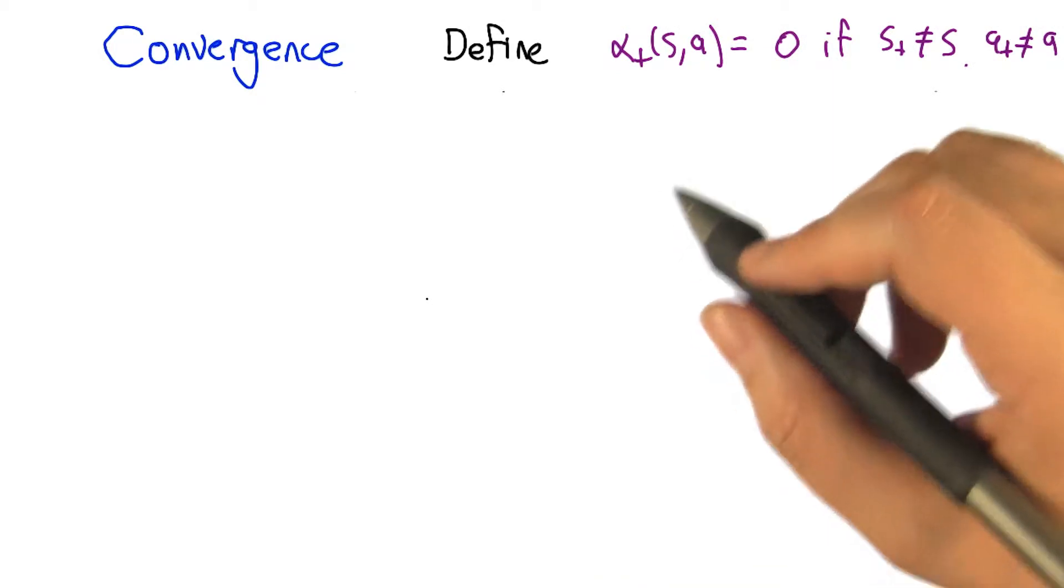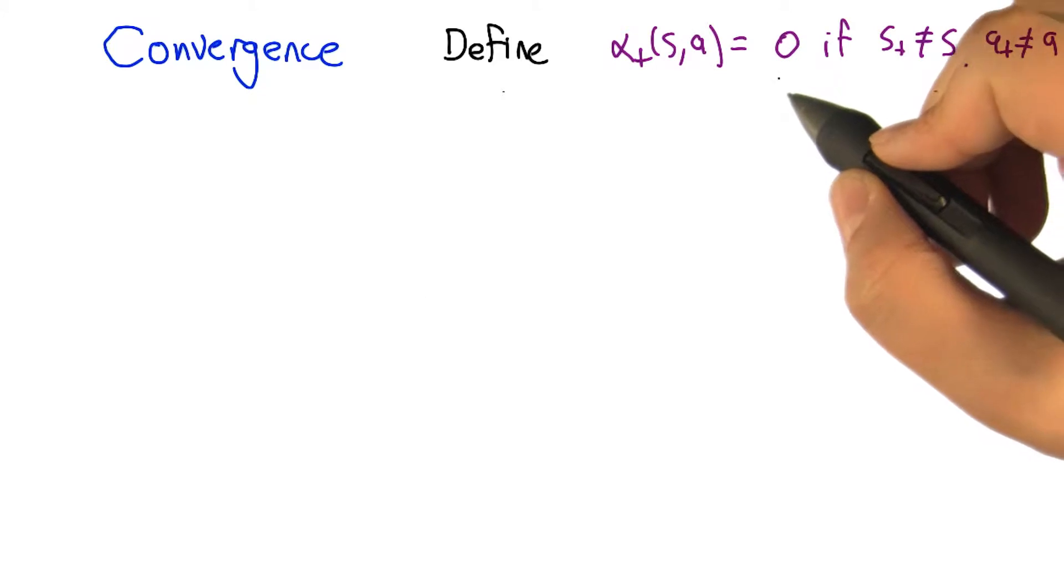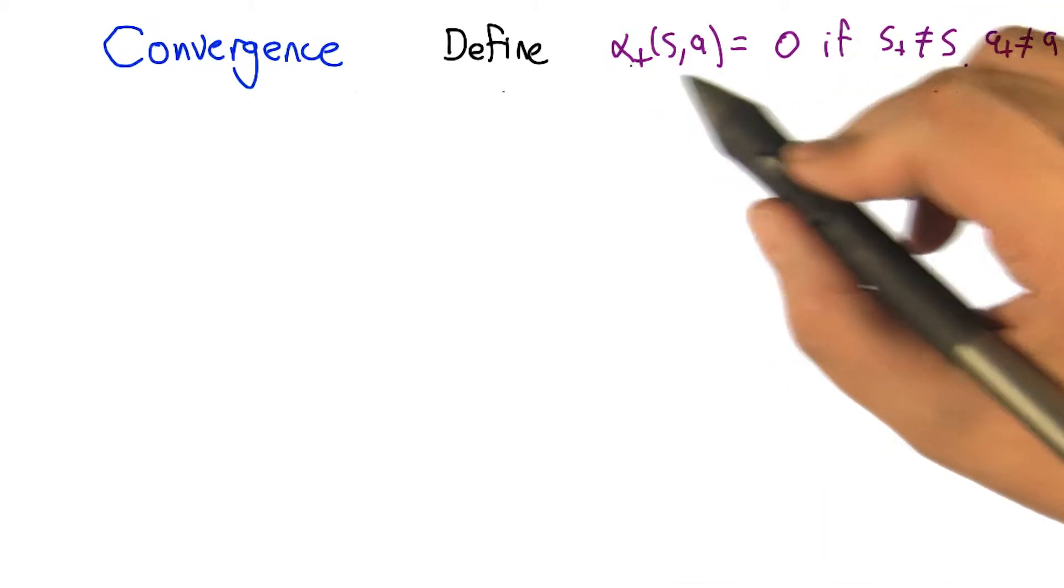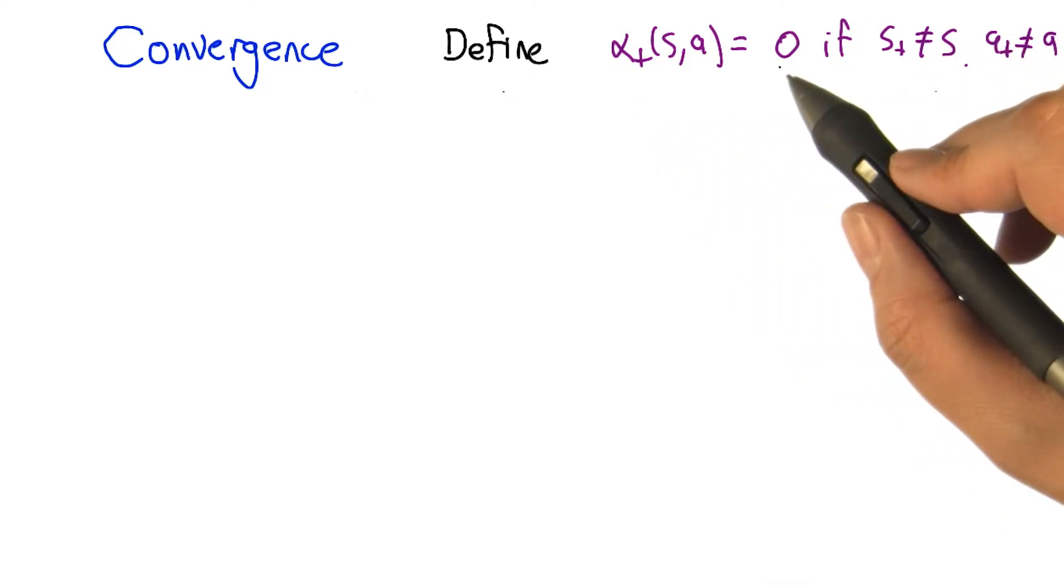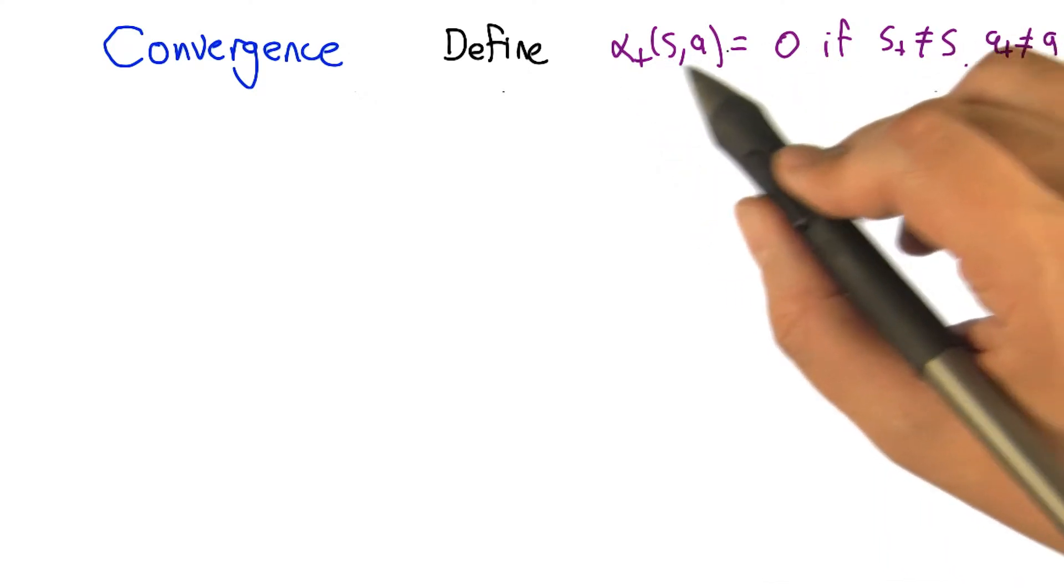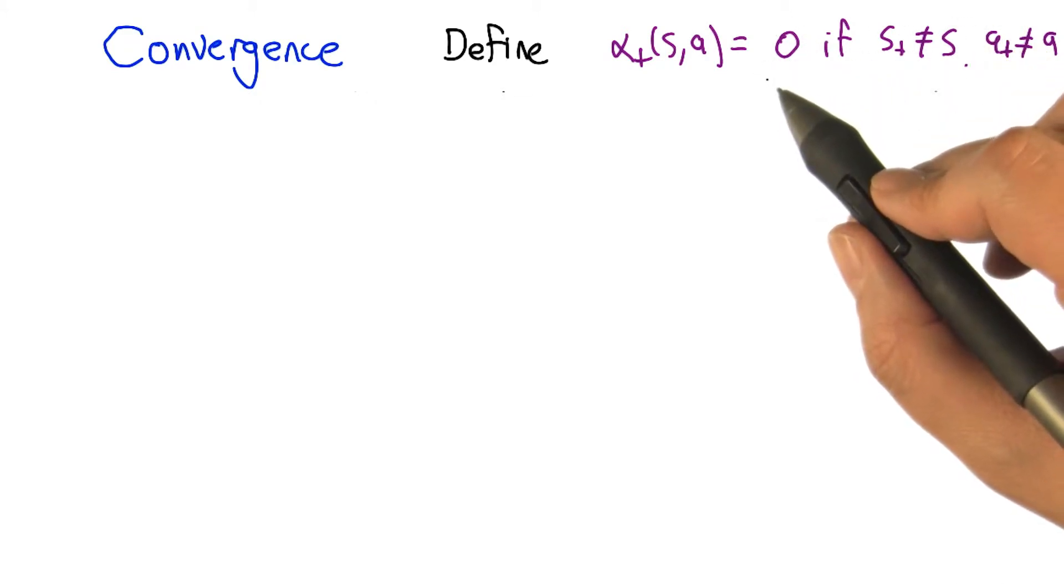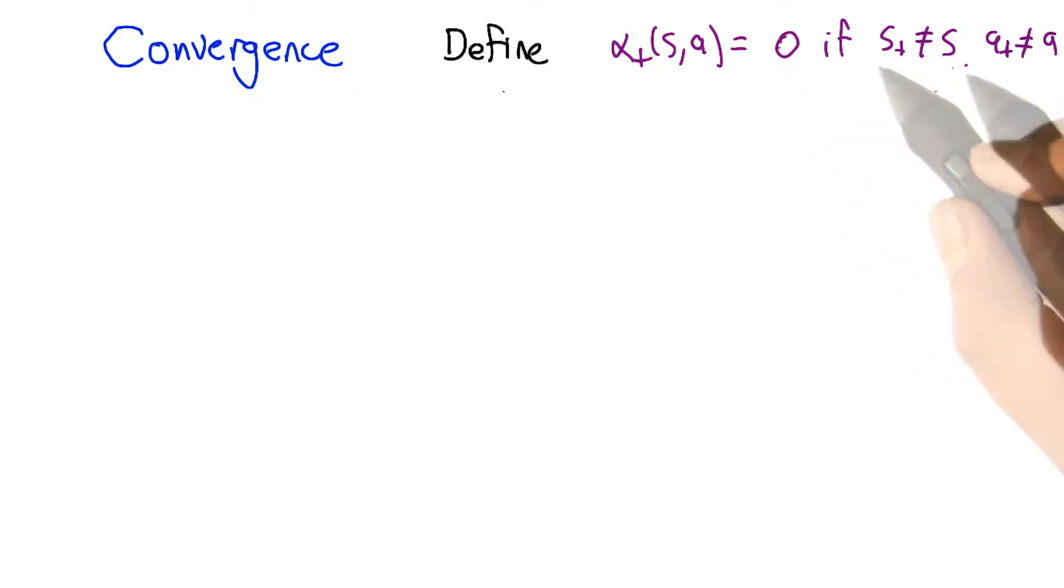So the first thing we're going to do is, just to make things simpler to write down, we're going to say that Q-Learning and update algorithms like that are going to update all state-action values on all time steps. However, if it's a state-action value that doesn't actually correspond to the current state-action pair that we just experienced, then we just set the learning rate to zero. So that just means leave the Q values alone, except for the state-action pair where you actually just experienced and got a transition.